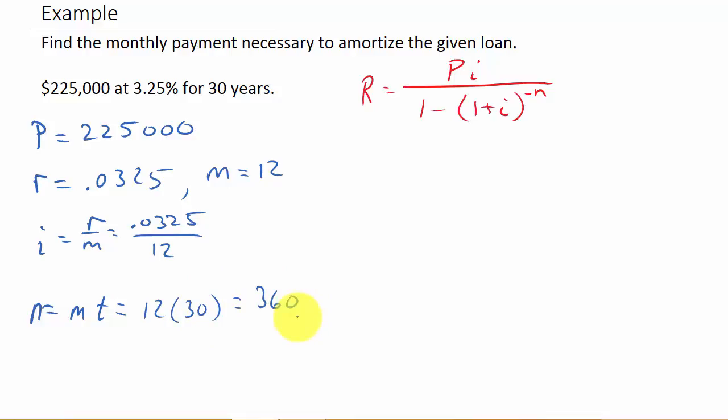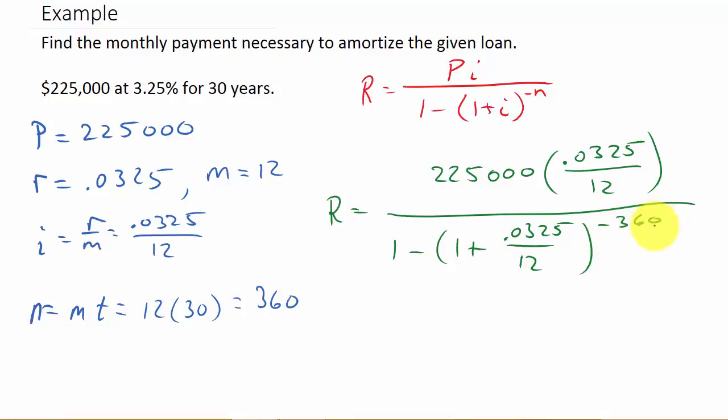Now we have everything. Let's plug it in. R equals 225,000 times i, which we're leaving as 0.0325 over 12, divided by 1 minus 1 plus 0.0325 over 12 raised to the negative 360. Now the fun part, punching this into your calculator.